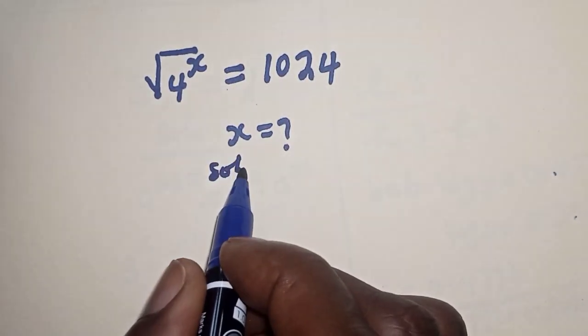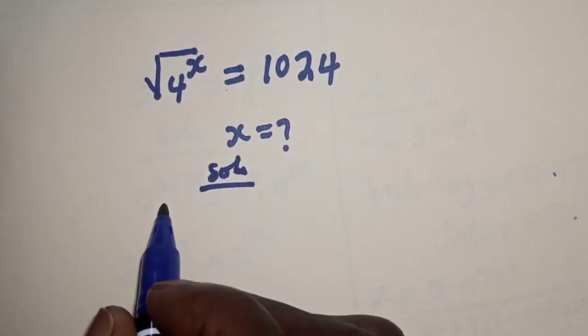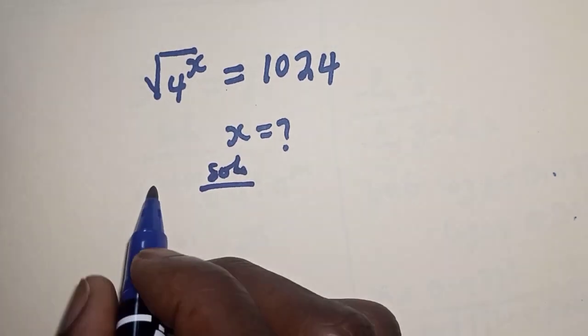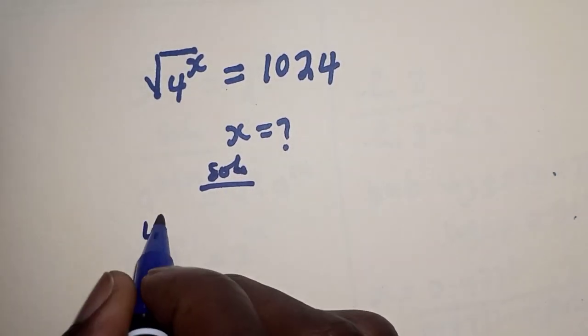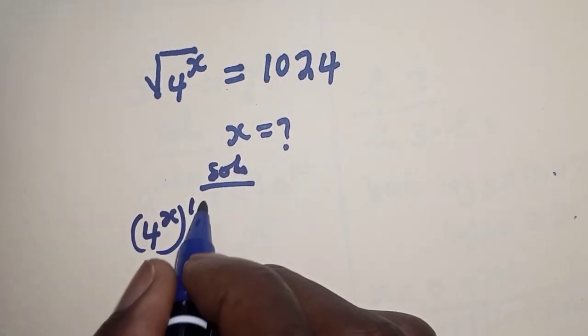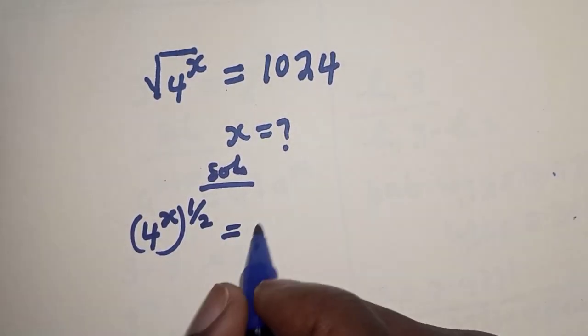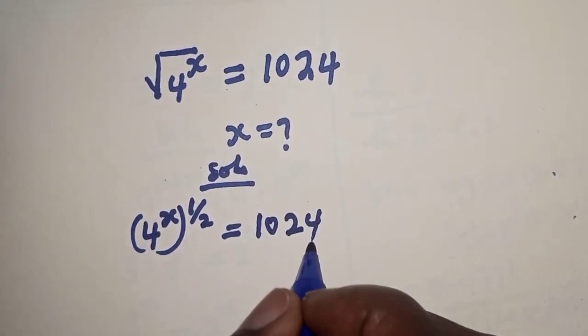Solution. Square root of 4 raised to power s can be written as 4 raised to power s raised to power 1 over 2 is equal to 1024.